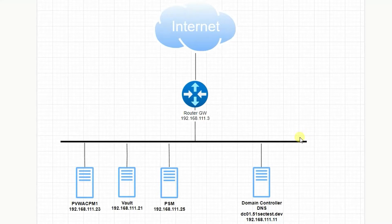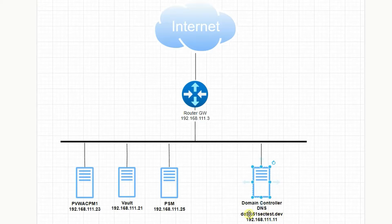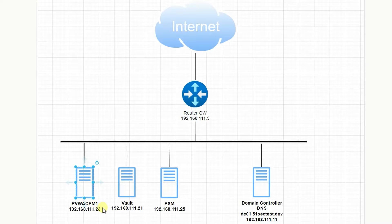Here is how my lab looks like — it's similar to what I did for the 13.x version. We will have a gateway to the internet, that's our router, and a domain controller with DNS installed. My lab domain is 51sec.test.dev at 192.168.111.11. I'm going to install VALT on .21, CPM and PVWA on .23, and PSM on .25.